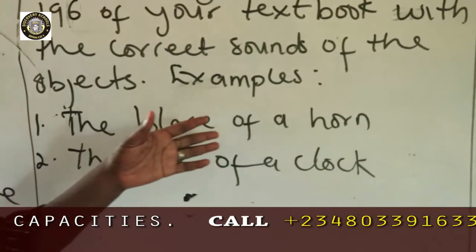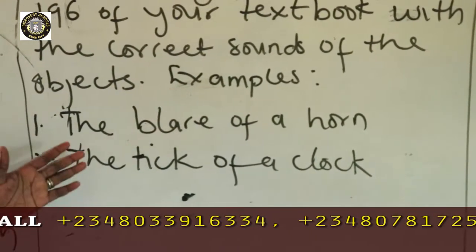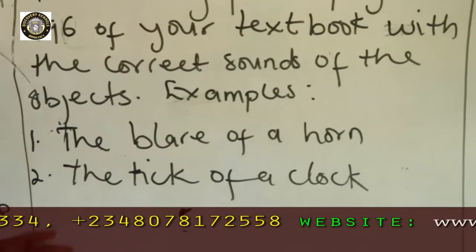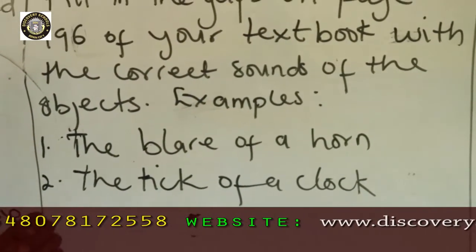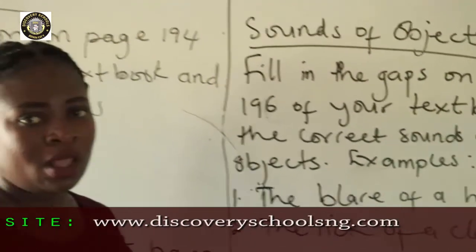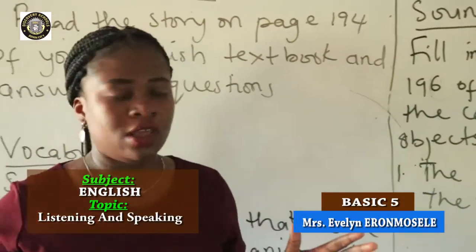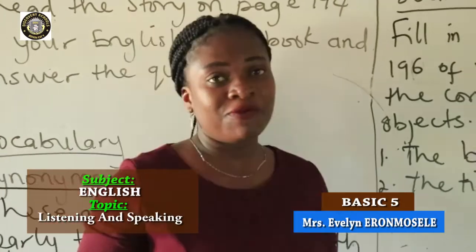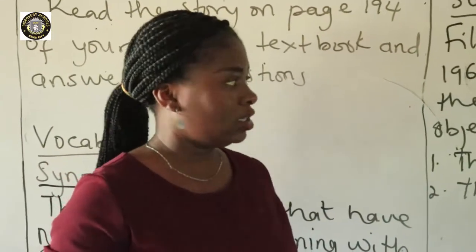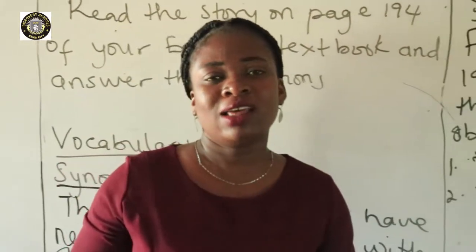For example, the blare of a horn. The tick of a clock — remember, the sound that the clock produces is tick, so the tick of a clock. The booming of the gun. Go to your textbook and fill in the gaps with the correct sounds of the objects. Thank you very much for listening, and have a nice day.